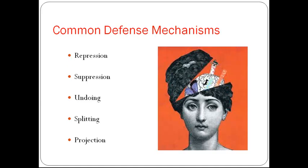Some common defense mechanisms: Repression is temporary or long-term forgetting of unpleasant or unwanted experiences, emotions, or ideas from conscious awareness. An example is after fighting with her husband, a patient forgets to pick up his drug prescription. Suppression is the conscious denial of a disturbing situation or feeling — for example, a teen who does not get her period after unprotected sex consciously denies being pregnant and does not seek medical attention. Undoing is when a person makes up for an act; for example, after flirting with another man, the wife buys her husband a gift to make up for her wrongdoing.